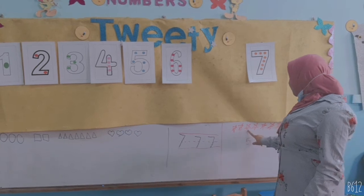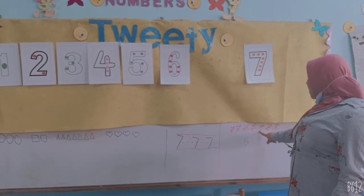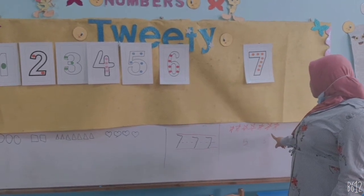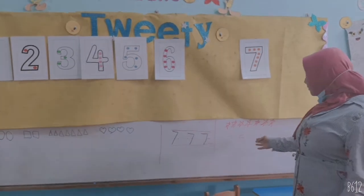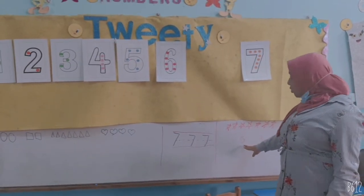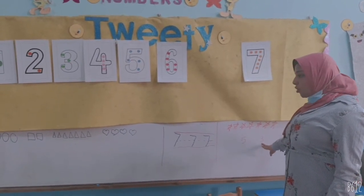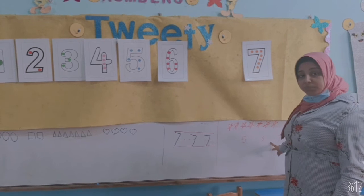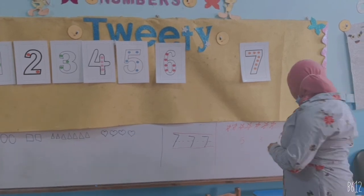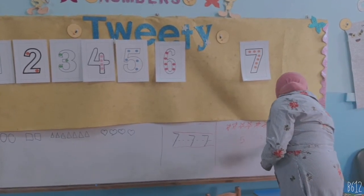1, 2, 3, 4, 5, 6, 7. Where is number 7? This? No. This? No. This is number 7? Yes.